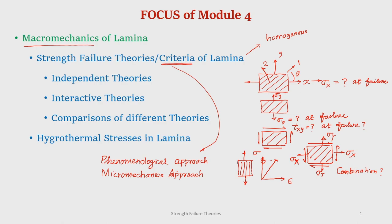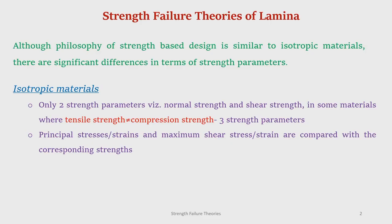So we will discuss these failure theories and have a comparison, and then finally in this module we will also see the hygrothermal stresses in a lamina. Coming to the strength failure theories of lamina: the philosophy of the strength-based failure theory is the same as what we have learned in the case of isotropic material. I think all of us in our first course in solid mechanics have studied failure theories like maximum normal stress theory, maximum shear stress theory, and distortion energy theory.